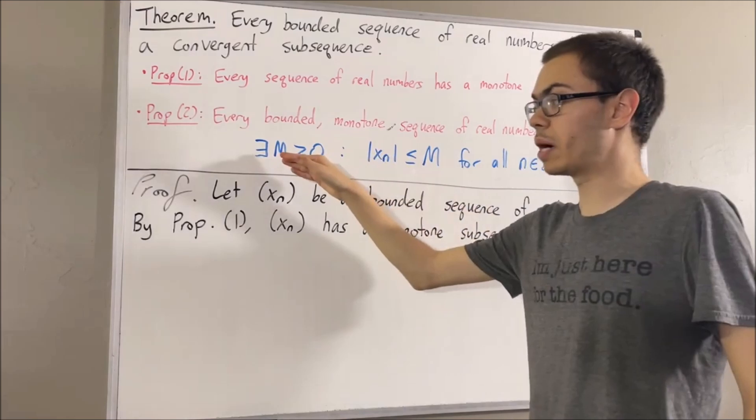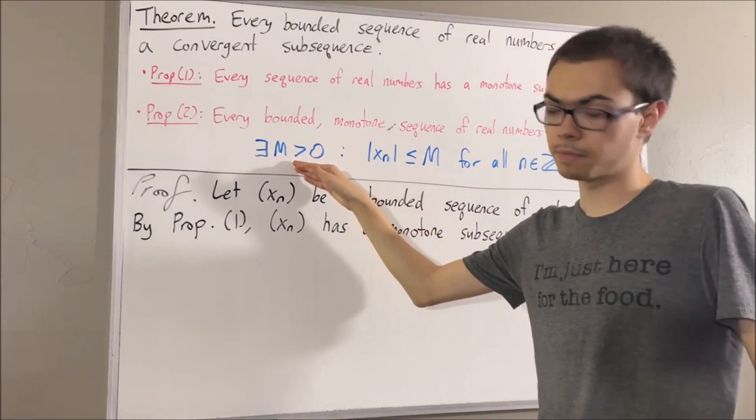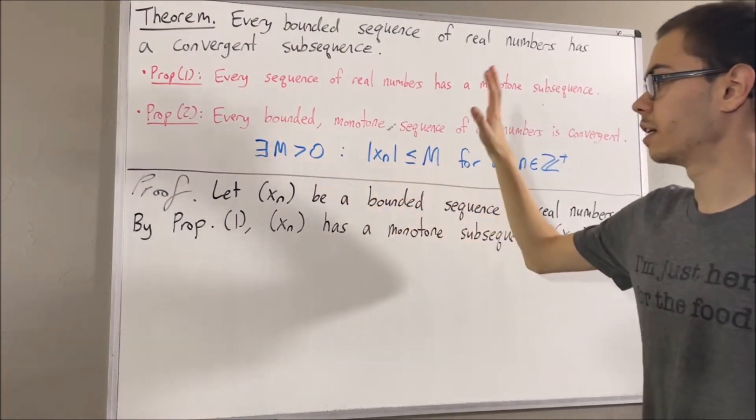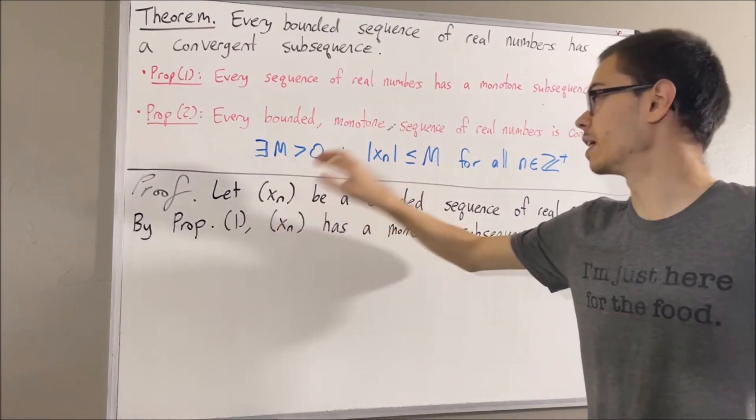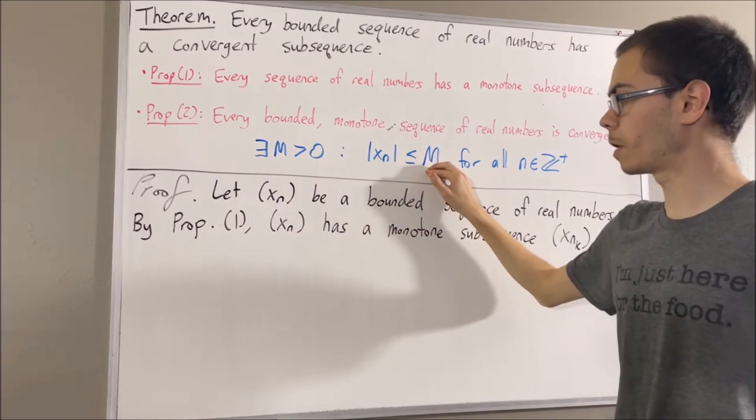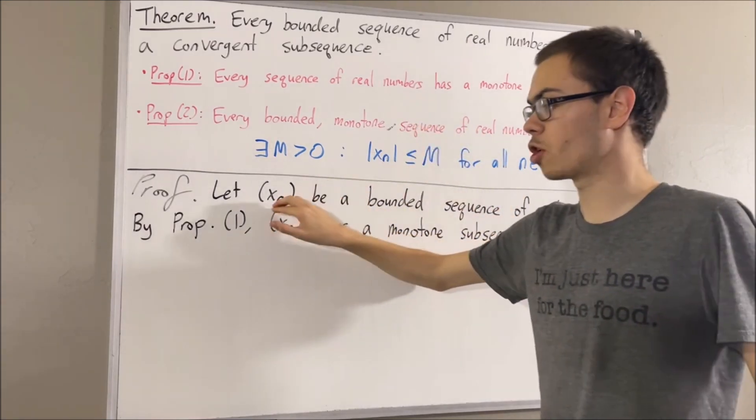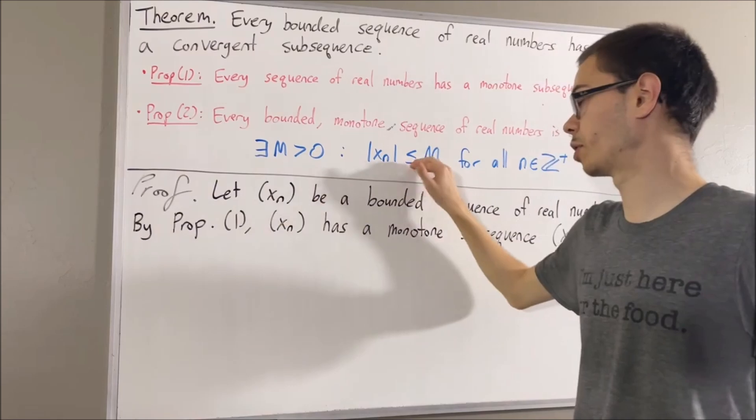It means there exists a positive real number capital M such that the absolute value of every term in this sequence is less than or equal to capital M. So the absolute value of every term in the sequence xn is less than or equal to capital M.